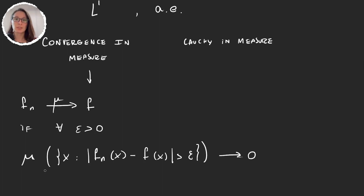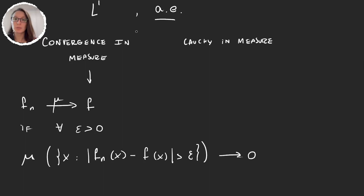Measures do not know what happens on sets that have small measure or measure zero — that brought us directly to the definition of convergence almost everywhere. But here what we're saying is all the points for which we don't have convergence form a set whose measure is going to zero. We'll see in a minute what the difference is between convergence in measure and convergence almost everywhere.